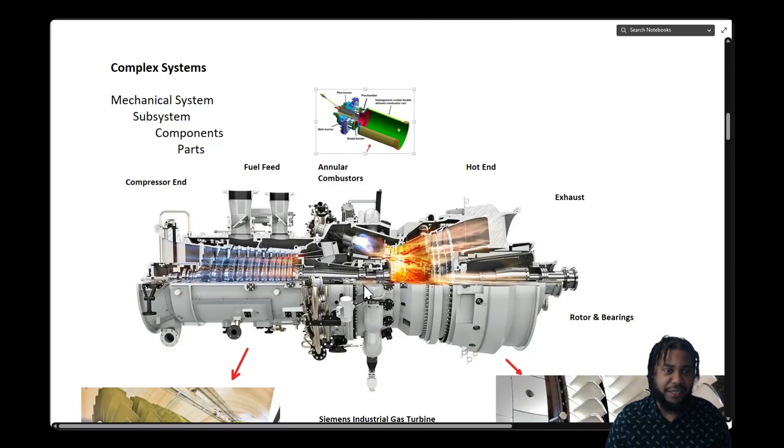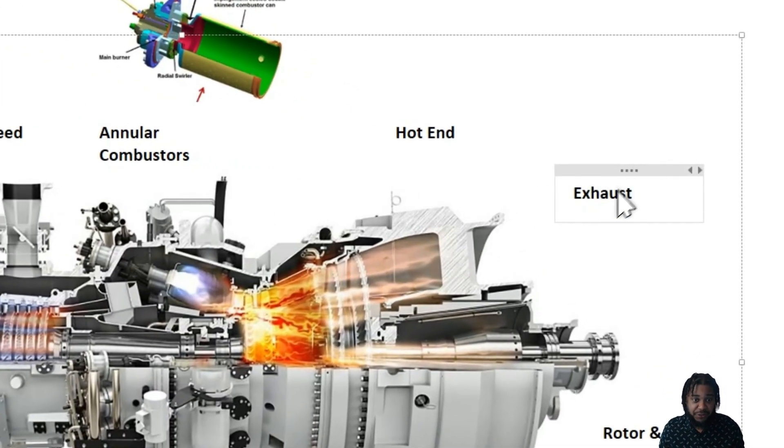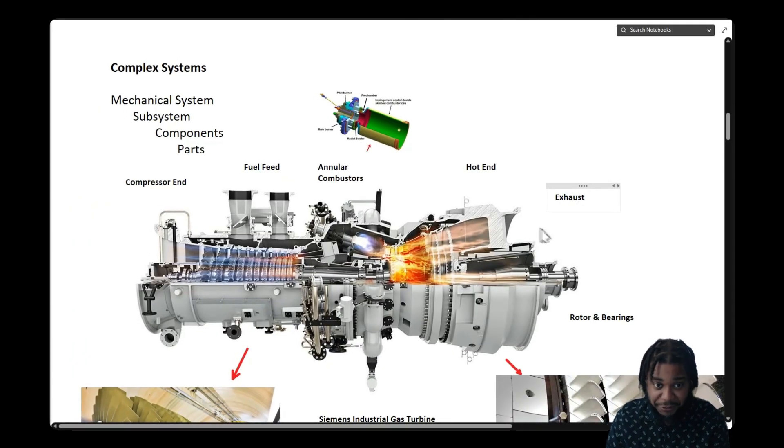Once that combustion process is taking place, we have really hot gases that expand out of the hot end of this turbine. There are a series of blades, both stationary and rotating blades, that take that pressure and spin up the rotor. Then of course on the end we have an exhaust system that may have a flow guide that controls the pressure at the outlet.